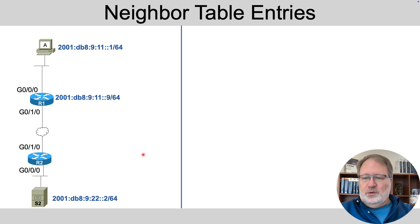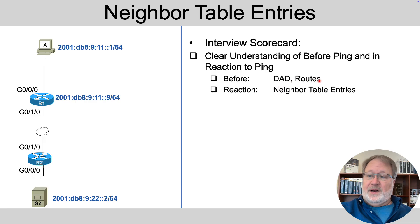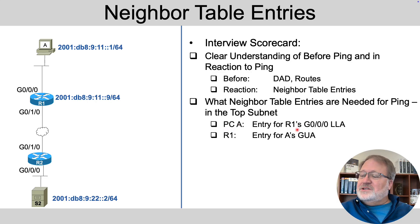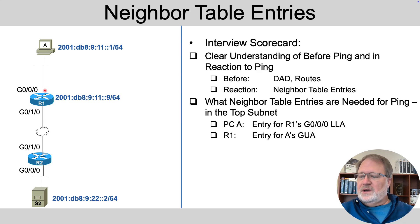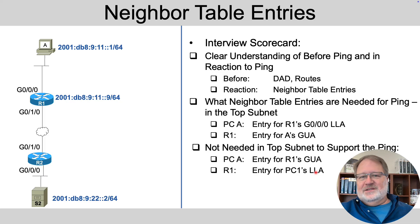To sum up for the whole interview review video — interview scorecard: I want a clear understanding from the interviewee about what happens before with duplicate address detection and adding routes to the host, and what happens in reaction for those neighbor table entries. PCA, using a default route that refers to R1's LLA, needs an entry for R1's link local address. R1, sending the packet back to the global unicast address, needs an entry for A's global unicast address. Conversely, what's not needed is an entry for R1's GUA on A, nor an entry for R1 to know about PC1's link local address — they might learn those for other reasons, but not in support of this ping.